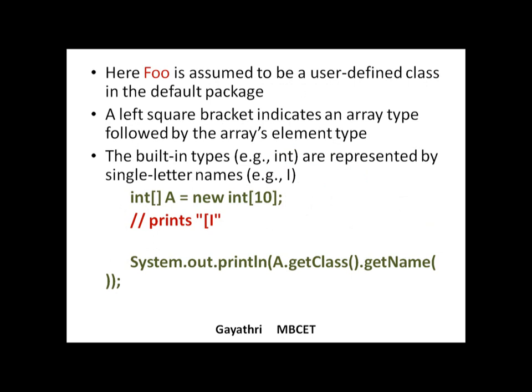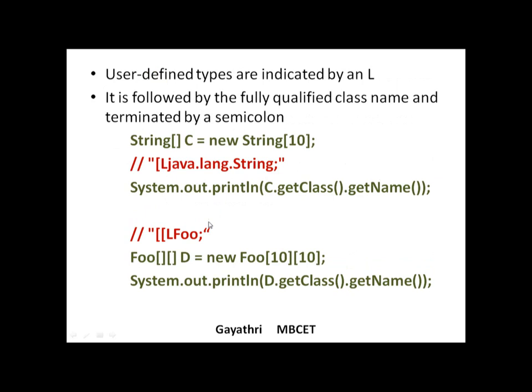Here is an example. If you have int[] a = new int[10], and print a.getClass().getName(), it will capture the class of object 'a' and print the name of that class. Since 'a' is an array, it shows a single square bracket followed by the class name. For built-in integer type, it prints 'I'.